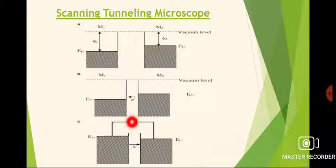The metal M1 which is connected to the negative terminal of the applied voltage has raised Fermi level relative to the other metal whose Fermi level is lowered. This principle is utilized in STM, as shown in this figure.